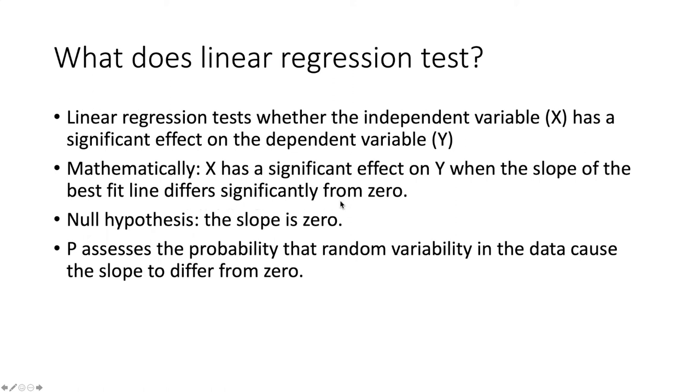If X has no effect whatsoever on Y, which is the null hypothesis, then the slope would be zero. If X has a significant effect on Y, then the slope is either significantly more than zero or significantly less than zero.